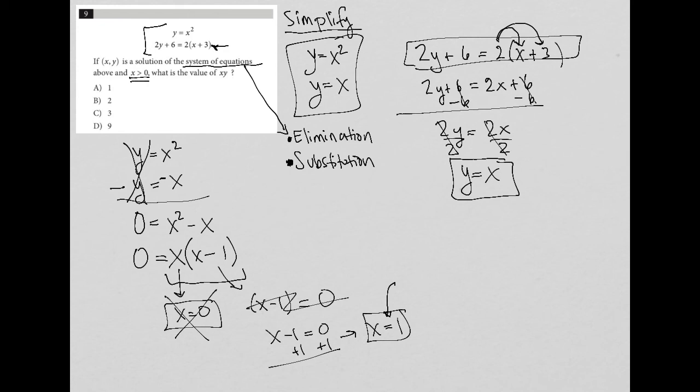Now the question wants to know what is the value of xy? Well if x is equal to 1, what is y equal to? Well again I go back to one of my original equations, either first or second. I'm going to choose the second one because it's a lot easier. We have that y equals x. So I know that y equals 1 because x is 1. So now I know that y is 1 and x is 1.